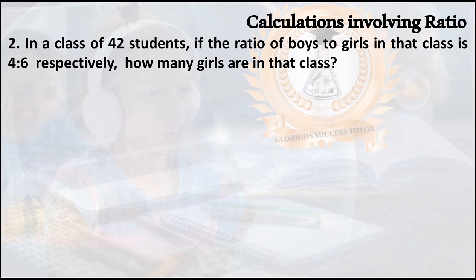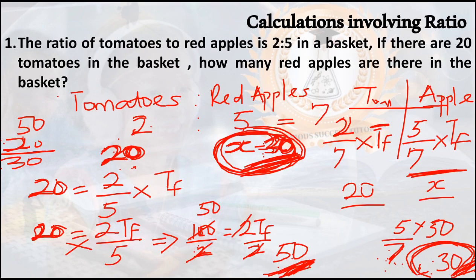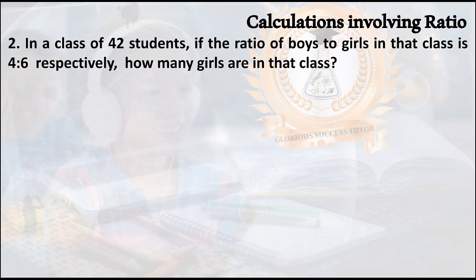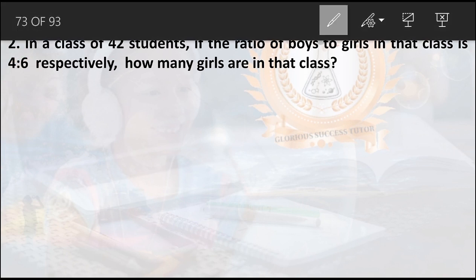Next example: In a class of 42 students, if the ratio of boys to girls is four to six respectively, how many girls are in the class? Here the total number of students is already given as 42, which makes this easier than the previous question.